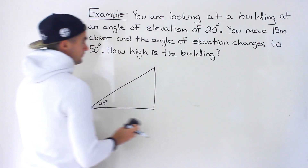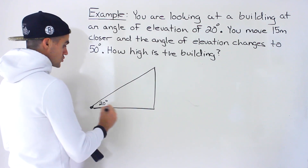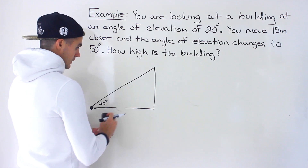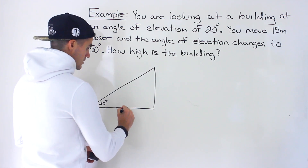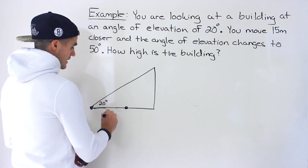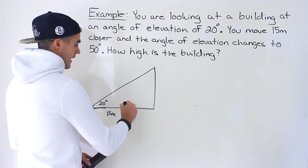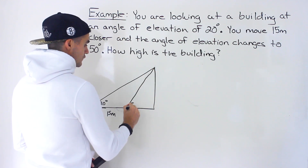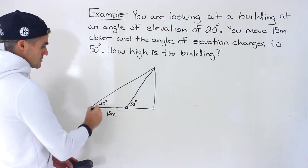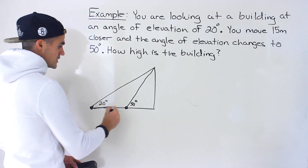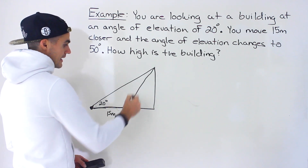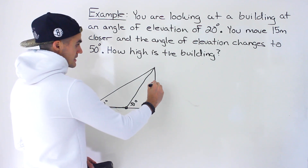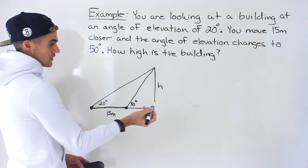Now what happens is you move 15 meters closer to the building — from here to here, that is 15 meters. When you do that, the angle of elevation changes to 50 degrees. So here it was 20 degrees, you move 15 meters closer, now it changed to 50. And what we have to find is the height of this building.